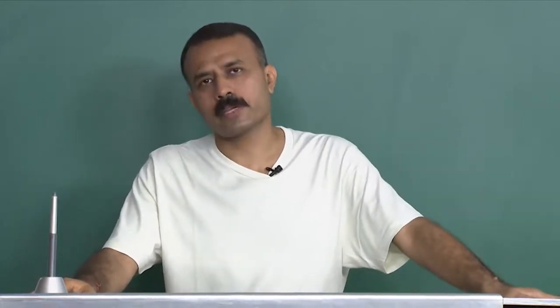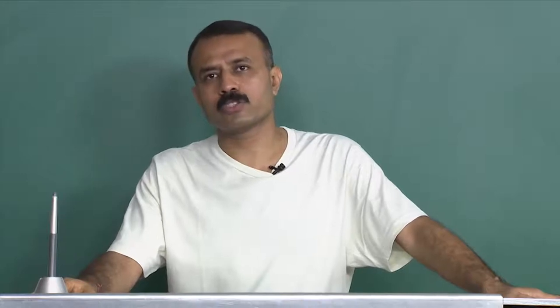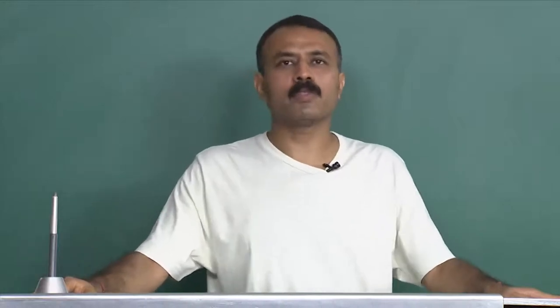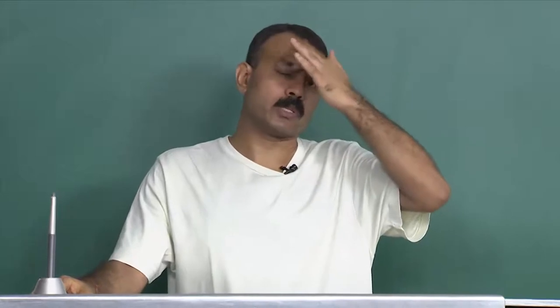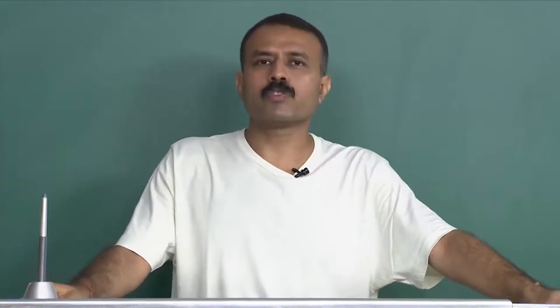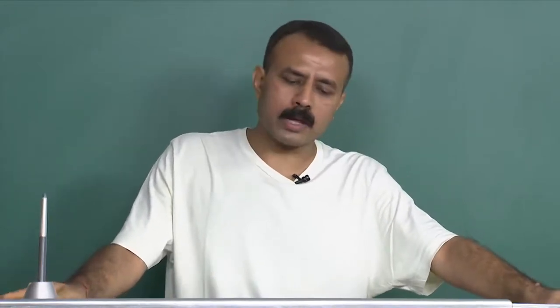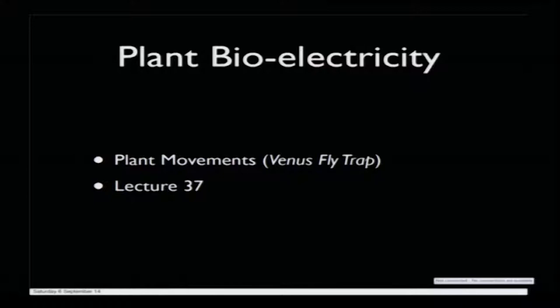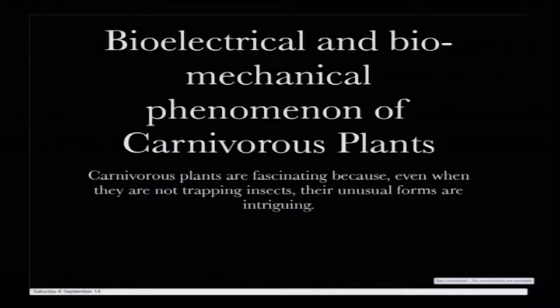These are plants which eat insects and respond upon touching by insects. Essentially there has to be a pressure sensor or touch sensor, similar to what is in mimosa, but the mechanism is different, though the basic electrical activities are fairly the same. Let us formally start this lecture with plant bioelectricity of plant movement in the venus flytrap — the bioelectrical and biomechanical phenomena of carnivorous plants.